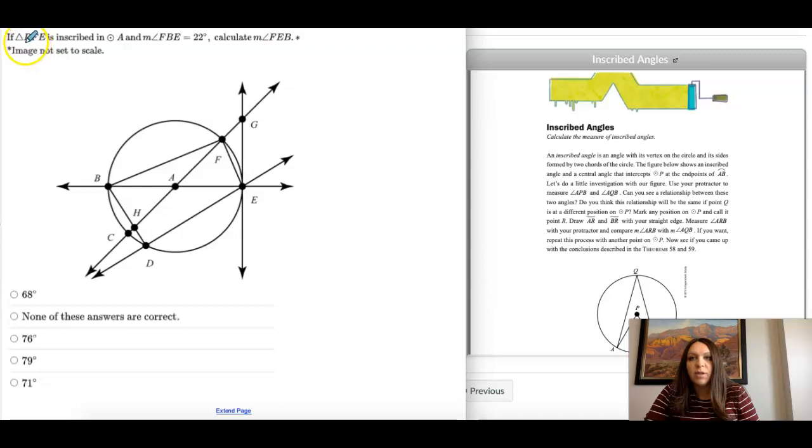So triangle BFE, so from here to here, it's inscribed in a circle, and we're given the measure of angle FBE, so F to B to E, this one is 22, and we're trying to figure out angle FEB, so this angle right here.